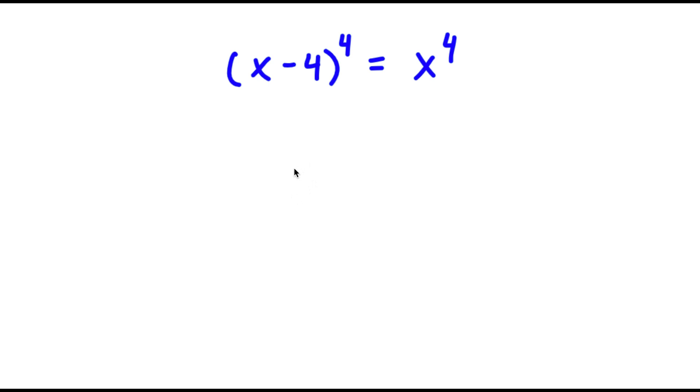In this problem, I have x minus 4 to the power of 4 is equal to x to the power of 4.